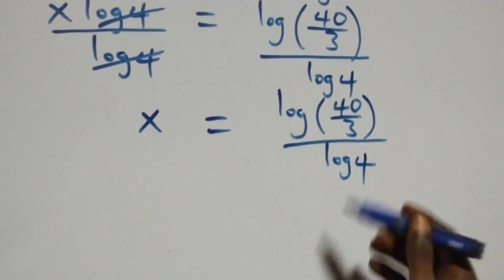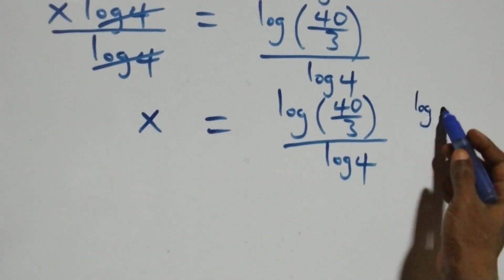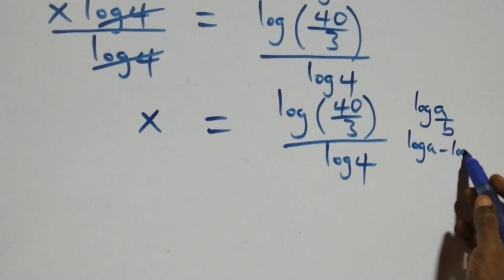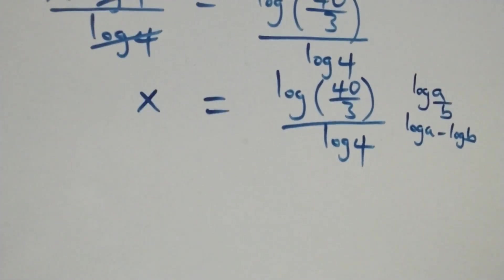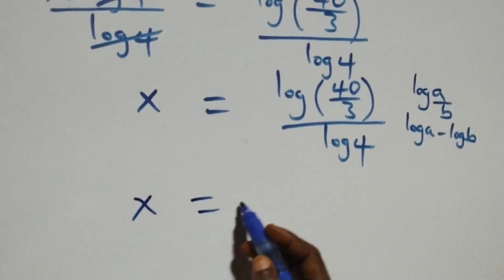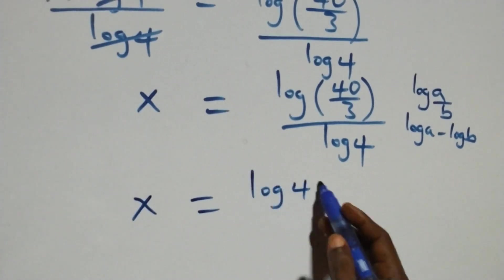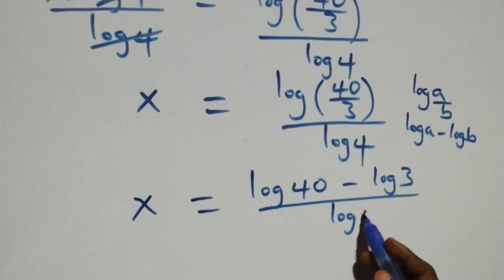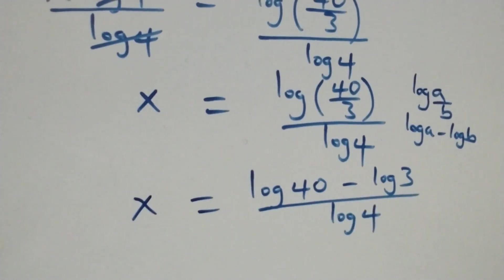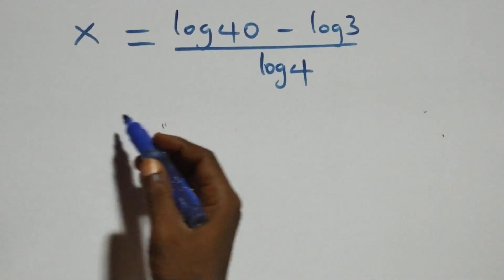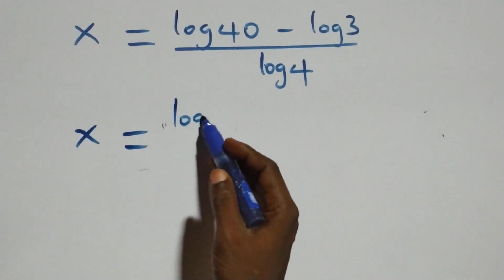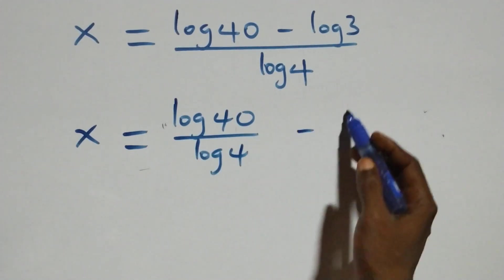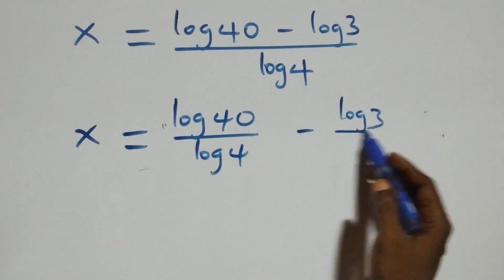From here we apply the law of logarithm: log a over b is the same as log a minus log b. That is what we have here. This becomes x equals to log 40 minus log 3, all over log 4.